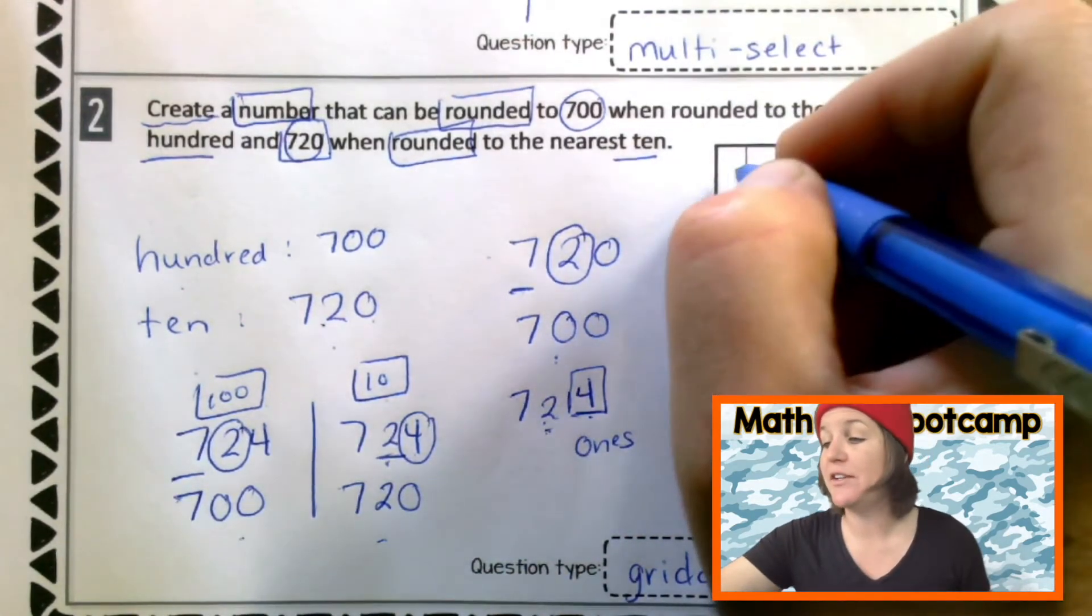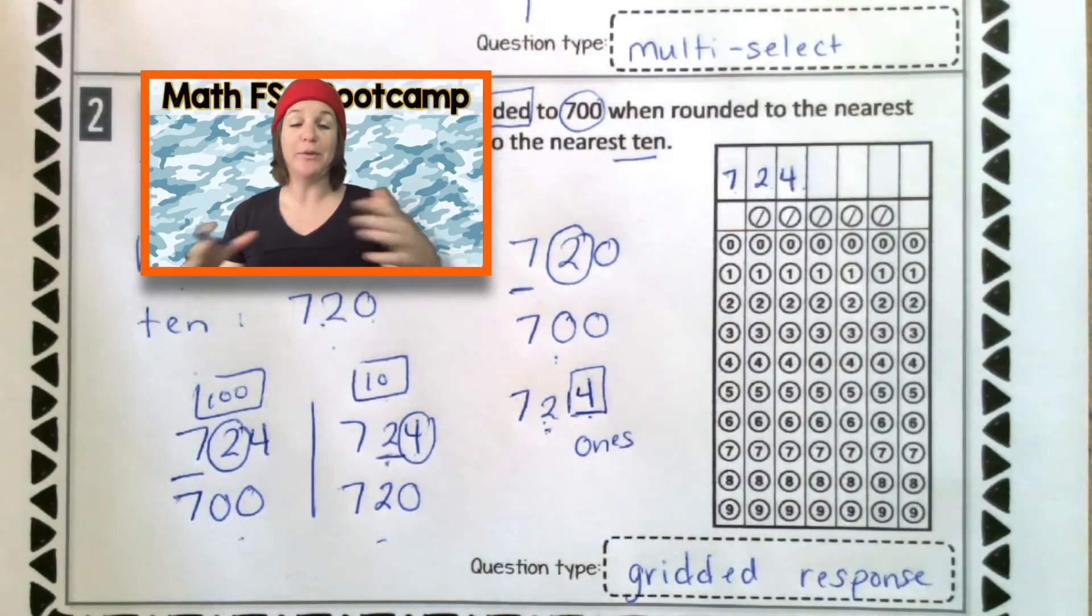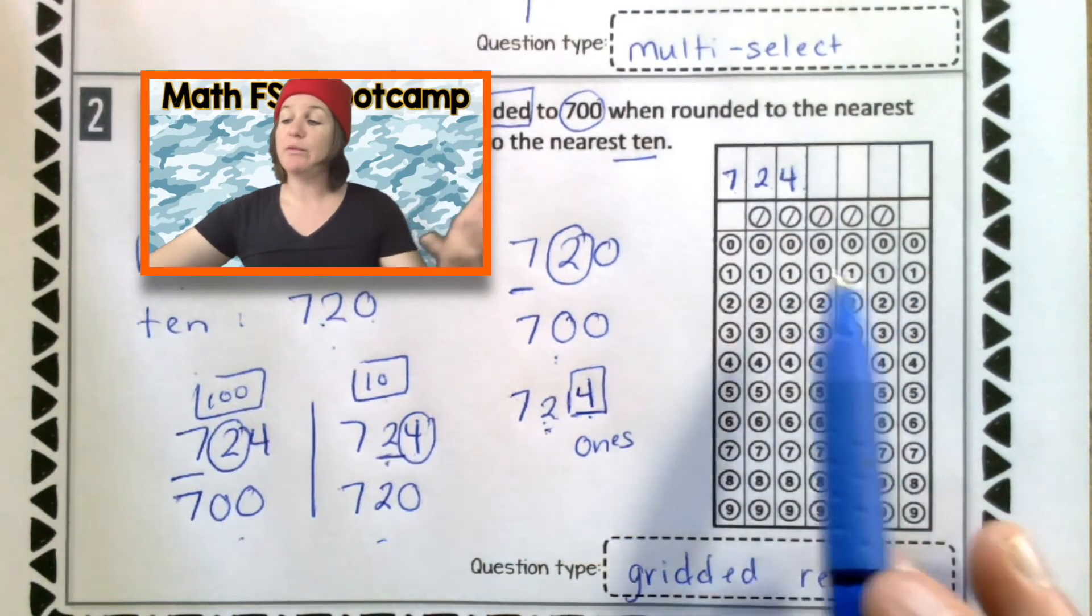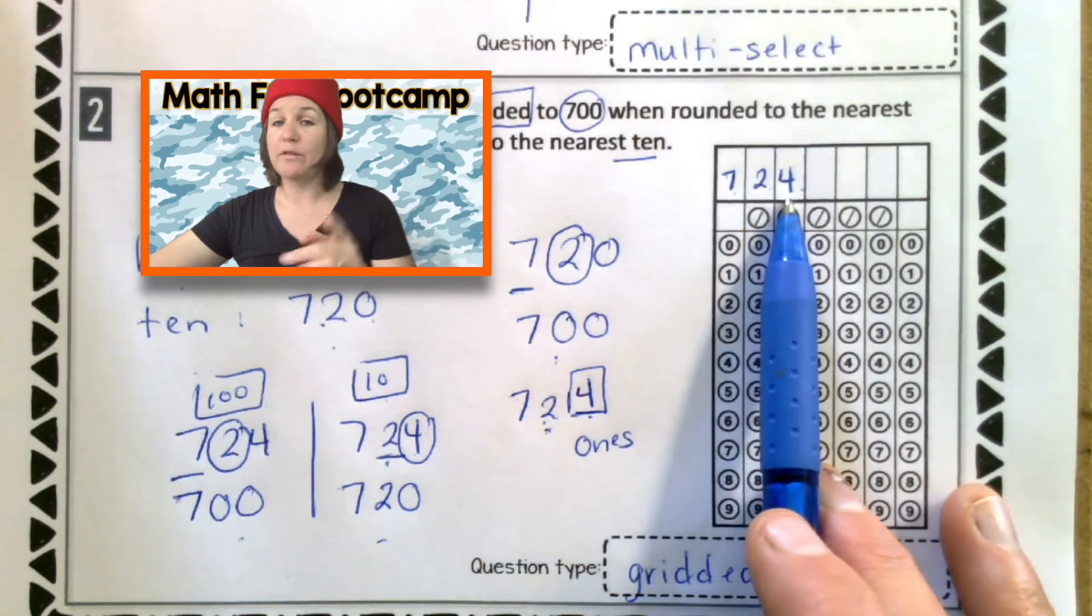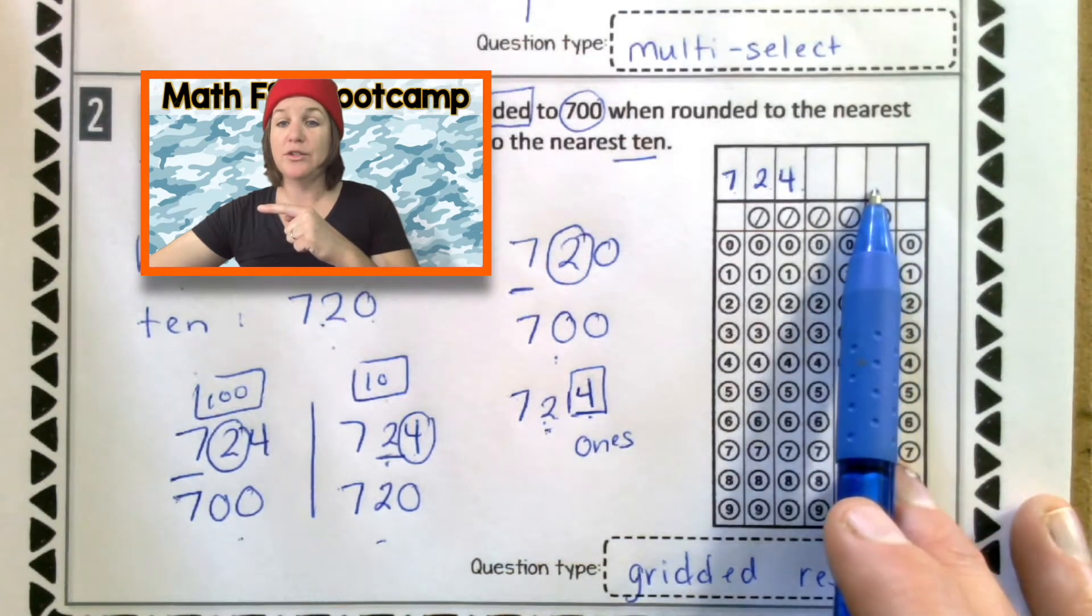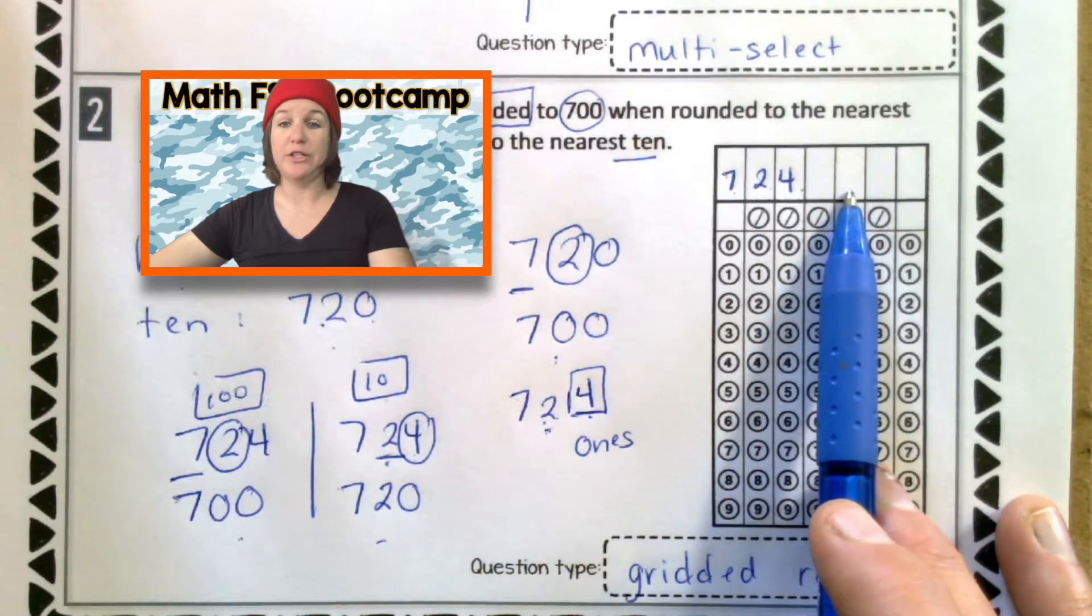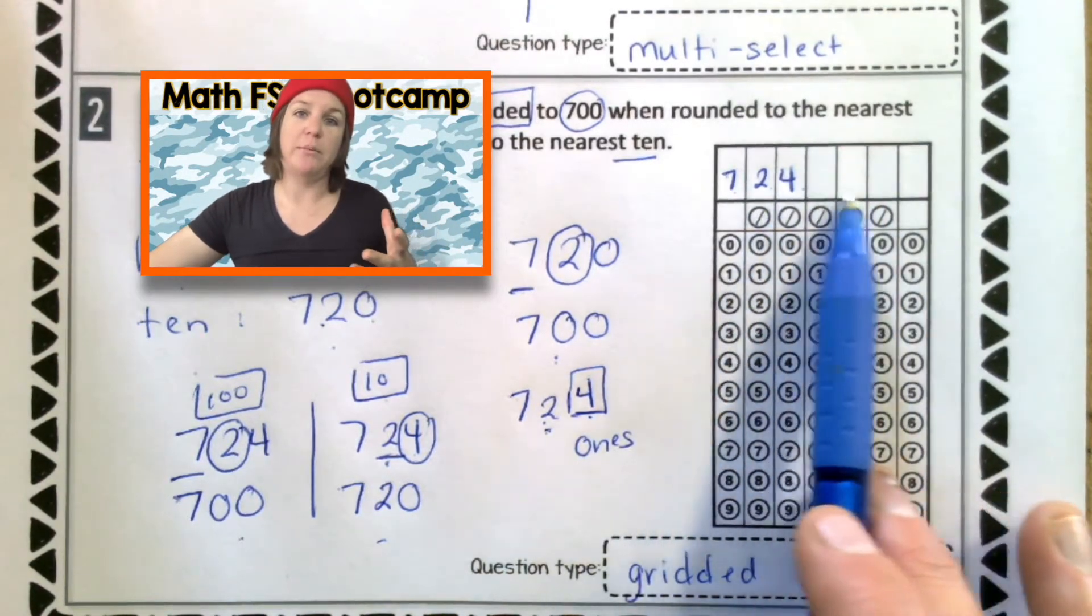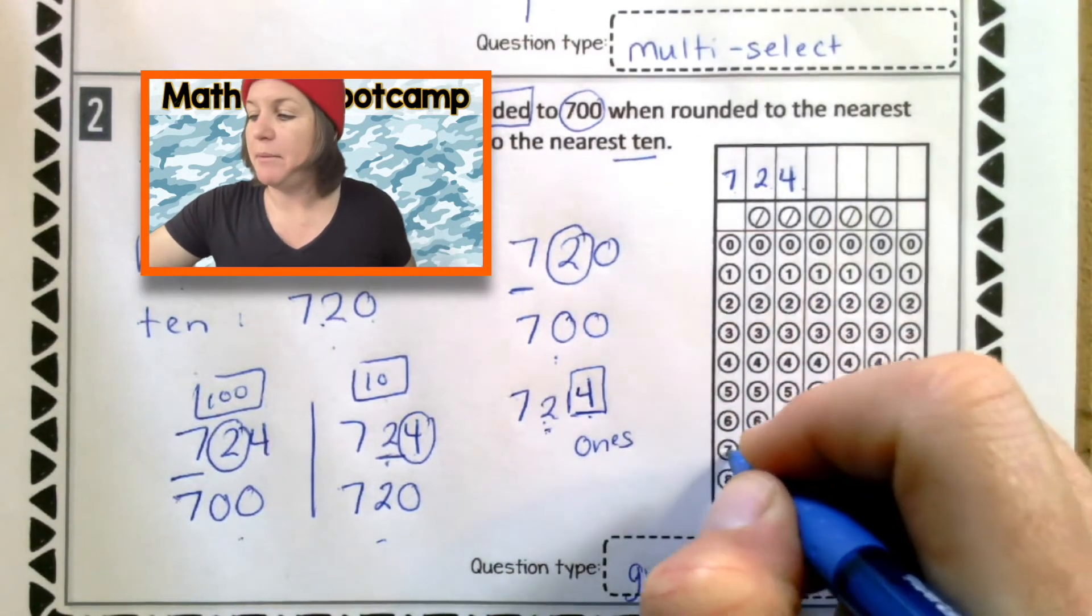So, I'm going to put 724 in here. And you know that on the gridded response, I've been saying it for this series. That with gridded responses, make sure that you're starting at the left and going over. Or, if your teacher tells you to start at the right and make it like 4, 2, and 7. That's totally cool too. I want you to follow your teacher's guide. Just whatever you do, don't put it randomly in the middle. Got it? Awesome. And then I'm going to bubble it in.